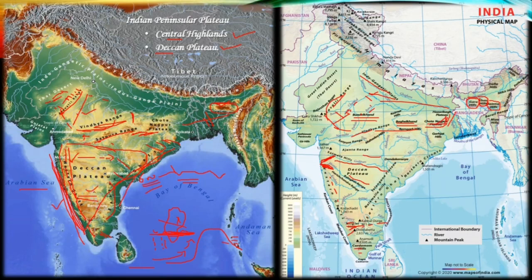The elevation of the Western Ghats increases from north to south. Its highest peak is Annamalai at approximately 2695 meters, and the second is Dodabetta at approximately 2637 meters. In the Eastern Ghats, Mahendragiri is approximately 1501 meters. Shevroy Hills and Javadi Hills are located in the southeast. Famous hill stations in this region include Udhagamandalam — known as Ooty — and Kodaikanal.